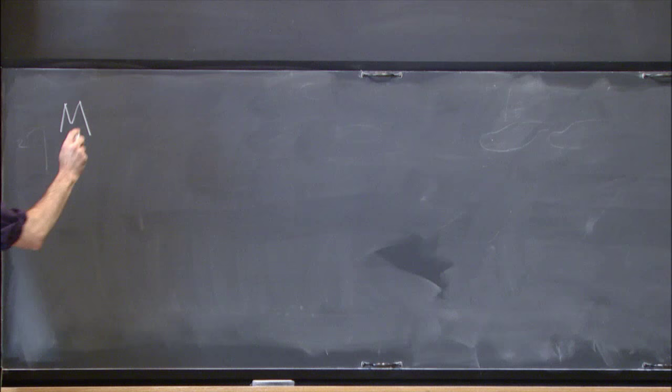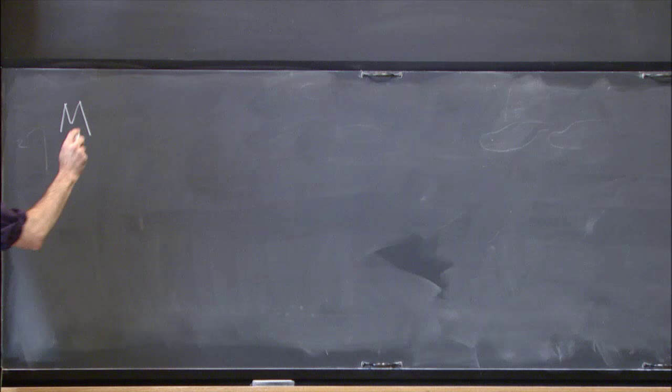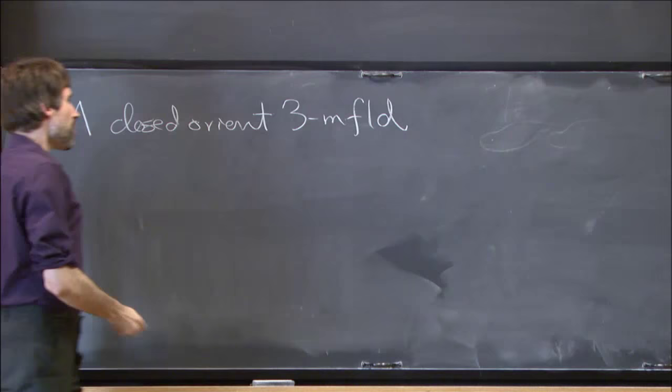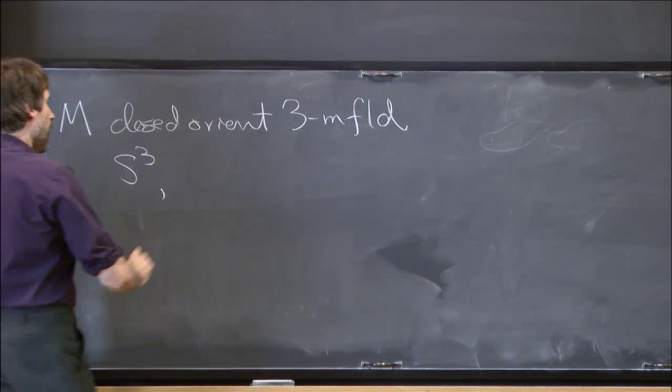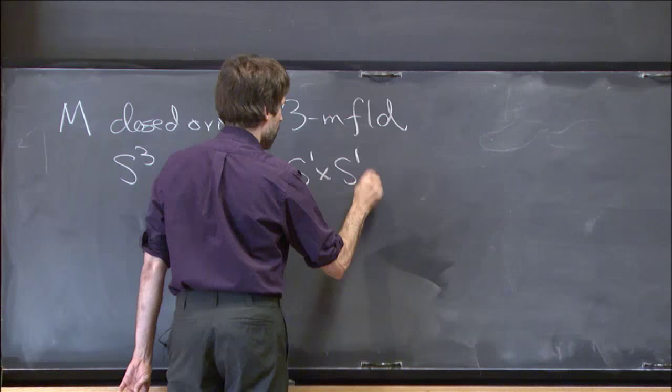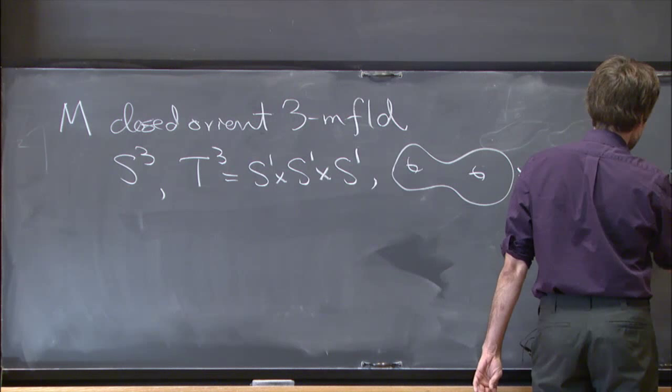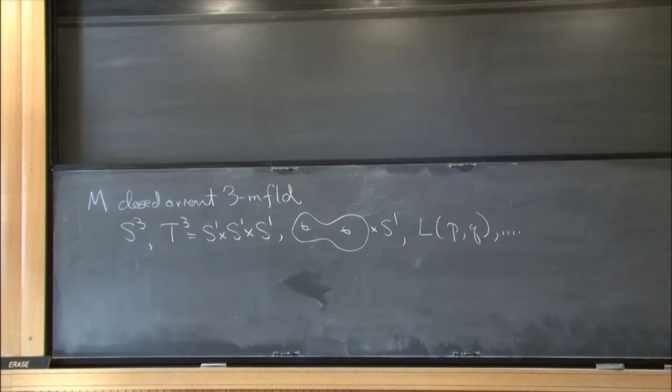The context is: let's consider a closed, orientable, connected three-manifold. The sorts of things you should be thinking of here would be perhaps the three-dimensional sphere, the three-dimensional torus S¹ × S¹ × S¹, the product of a surface of genus two with the circle, or maybe a lens space L(p,q) — whatever standard examples you've encountered before.